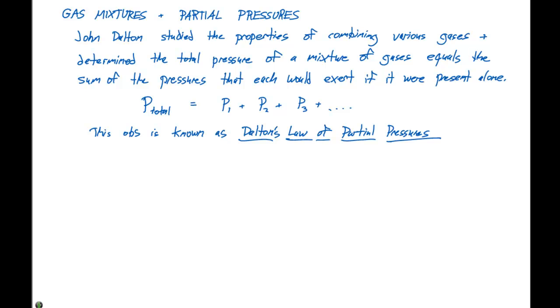We can rewrite this P total expression. If we assume each gas is ideal, we know that PV equals NRT, so P equals NRT divided by V. At constant temperature and volume, we can say that P total, instead of P1 plus P2 plus P3, is N1 times RT over V plus N2 times RT over V plus N3 times RT over V.